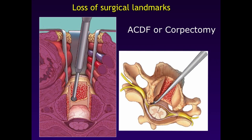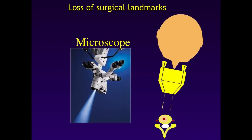A common cause of vertebral artery injury is loss of surgical landmarks. It is important to orient towards the midline and to know the course of the vertebral artery before proceeding. Using the microscope, one can skive off to the contralateral side, and using a coarse drill this is a common cause of vertebral artery injury from an anterior cervical approach.